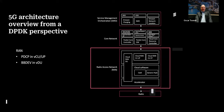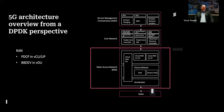In the cloud RAN space, the VCU user plane utilizes DPDK for packet processing in the PDCP layer. For the VDU, forward error correction (FEC) is one of the most compute-intensive pieces of the layer 1 software. By utilizing bbdev and a standardized interface for that type of acceleration, Ericsson is able to have a very portable and flexible solution based on the standardized DPDK interface.